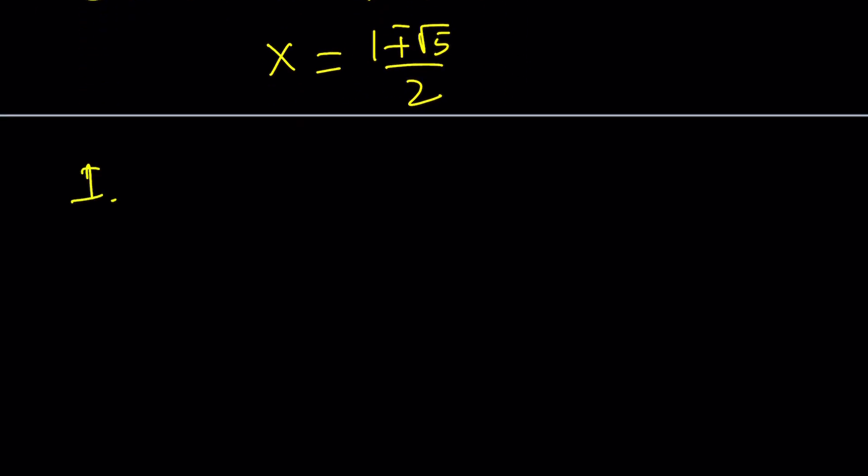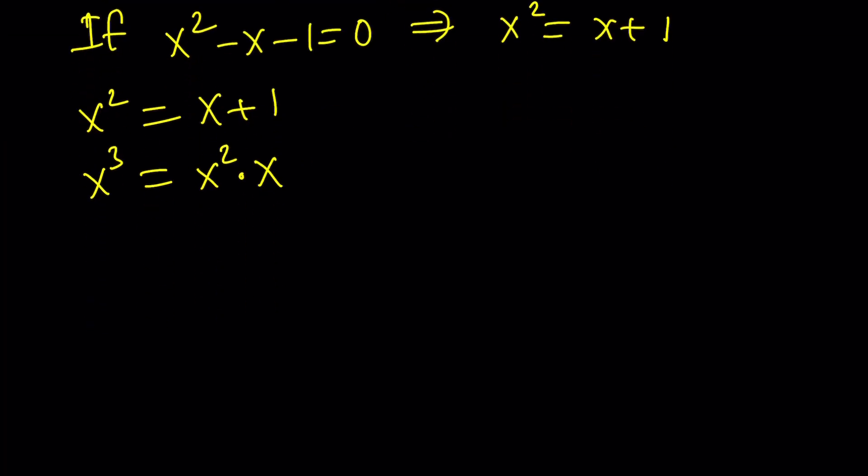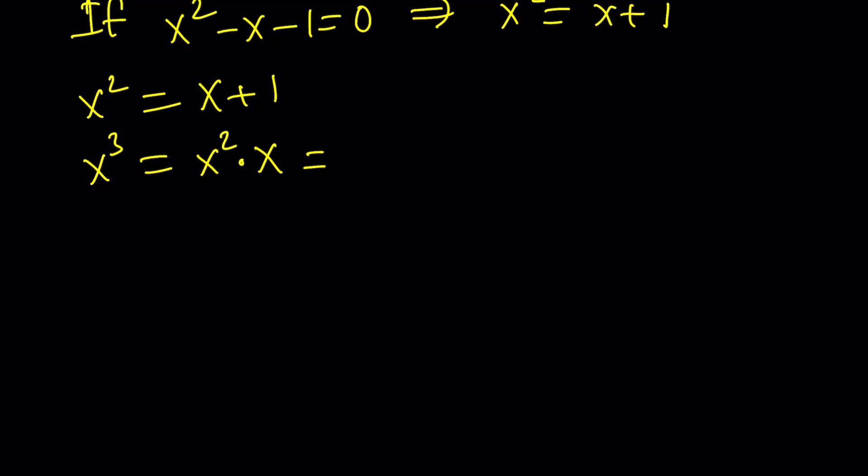Now, if x squared minus x minus 1 equals 0, then x squared equals this, right? So we start with this. x cubed will be x squared times x, which is this times x, which is x squared plus x. But remember, x squared is x plus 1, so it'll be 2x plus 1.